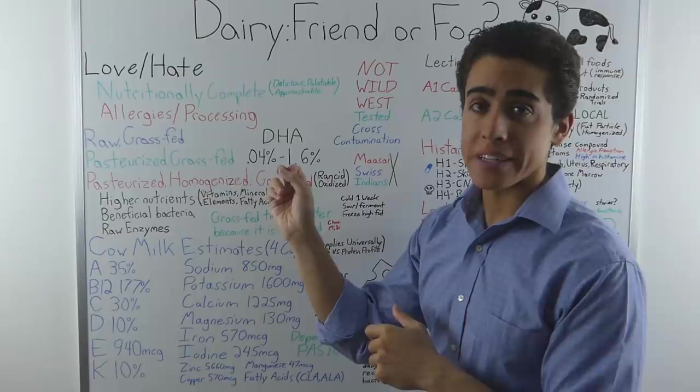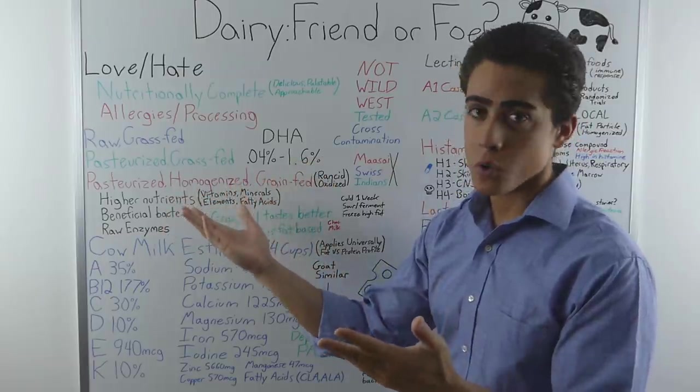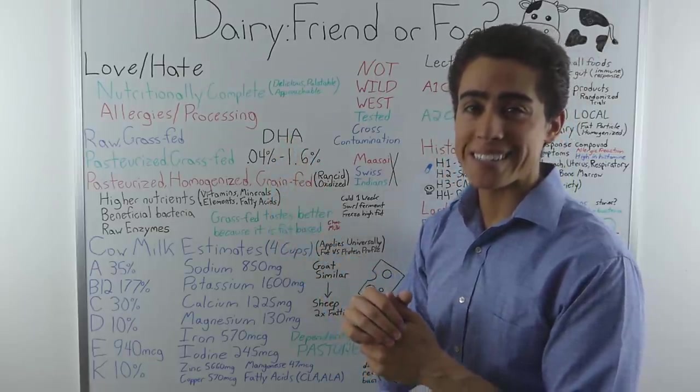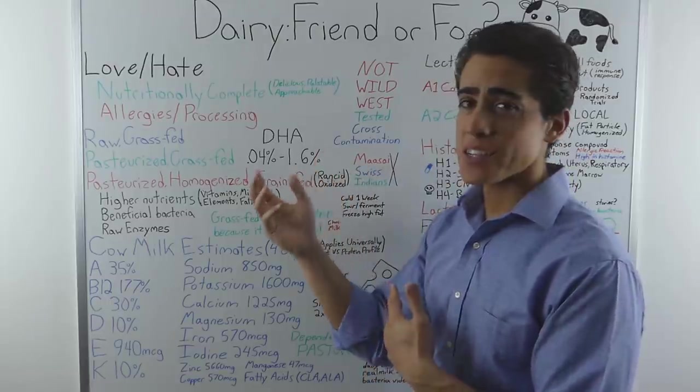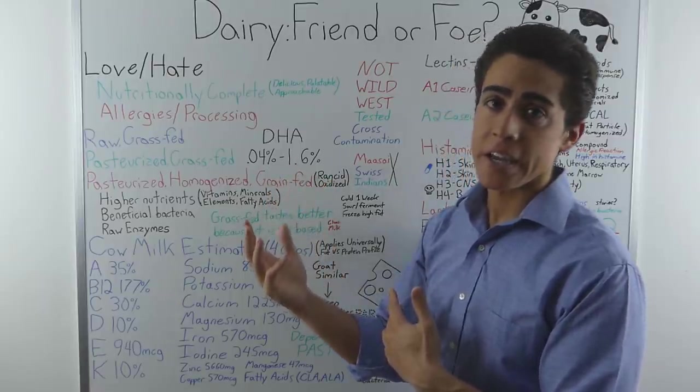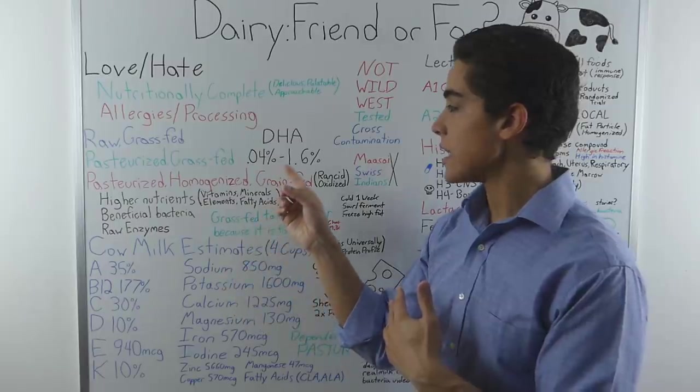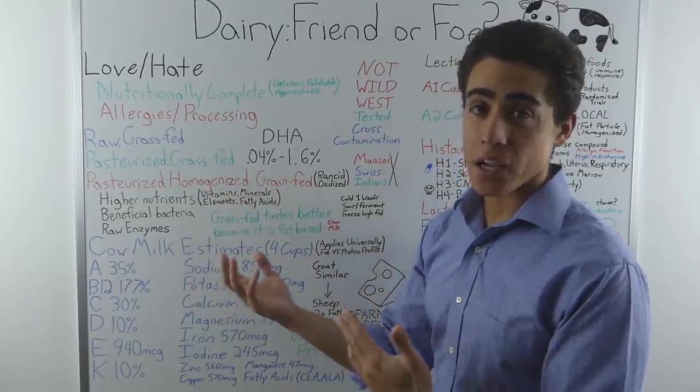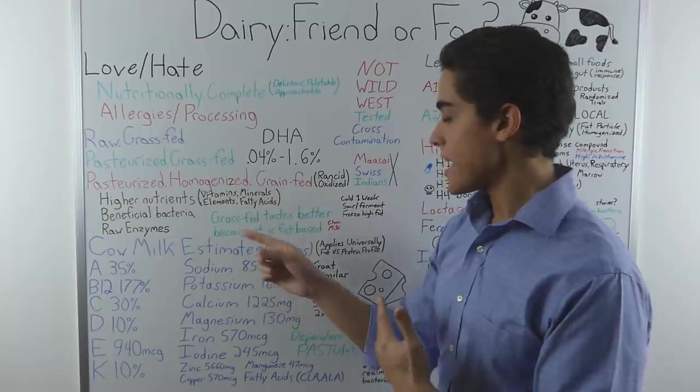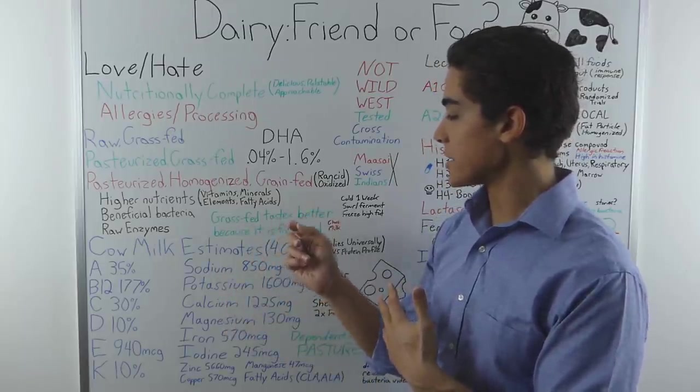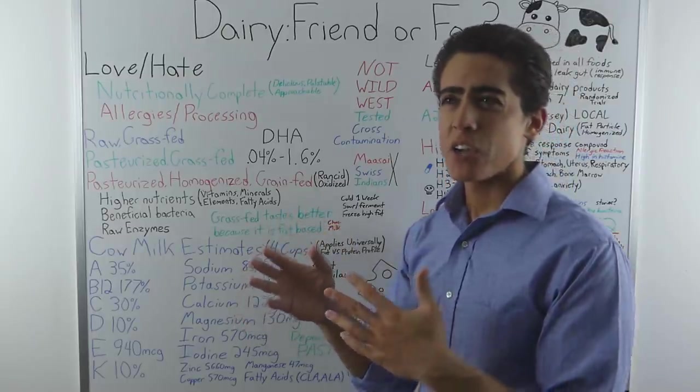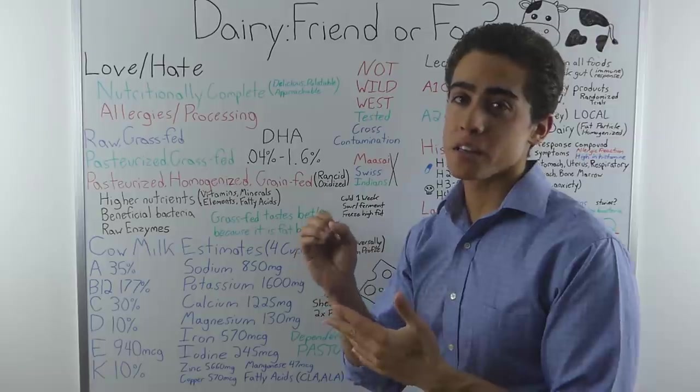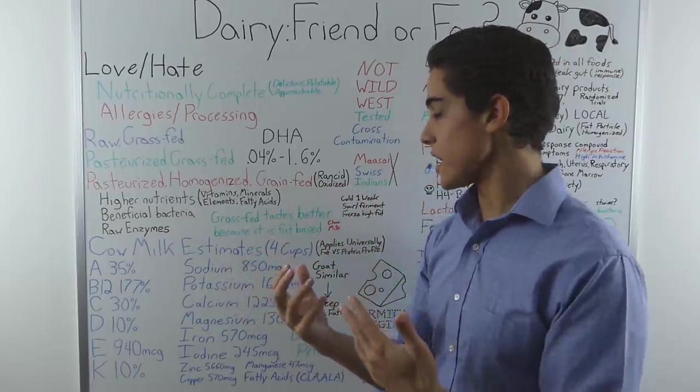One interesting thing is the variance in nutrition in breast milk and correspondingly cow's milk. Human breast milk can go from 0.04% to 1.6% in DHA depending on the fish content of the mother's diet. And although cow's milk doesn't contain EPA or DHA, it contains conjugated linoleic acid and alpha-linolenic acid. This is just to show the variance and how much of a difference the quality of food the mammal is eating goes directly into their breast milk. This also kind of ties into why grass-fed dairy always tastes better. And it's because it is fat-based. You don't really hear people saying, oh, I like supermarket dairy better than Kerrygold. Everyone seems to be in love with Kerrygold butter, which is a very popular grass-fed butter brand.